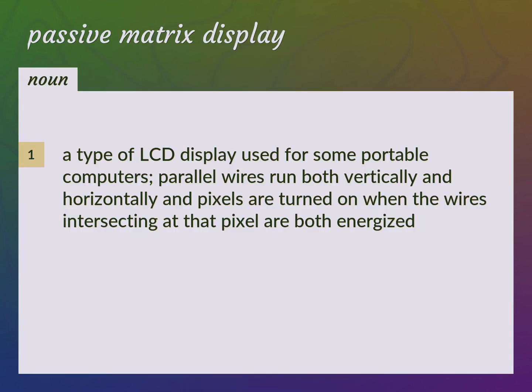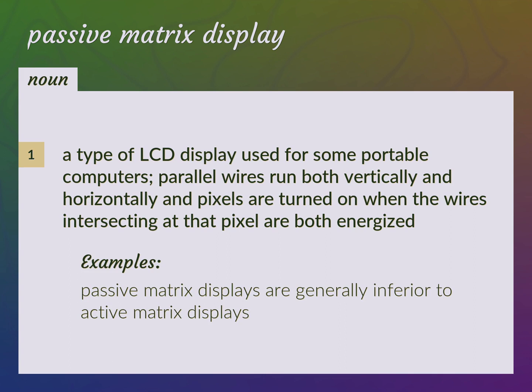A type of LCD display used for some portable computers. Parallel wires run both vertically and horizontally, and pixels are turned on when the wires intersecting at that pixel are both energized. Passive matrix displays are generally inferior to active matrix displays.